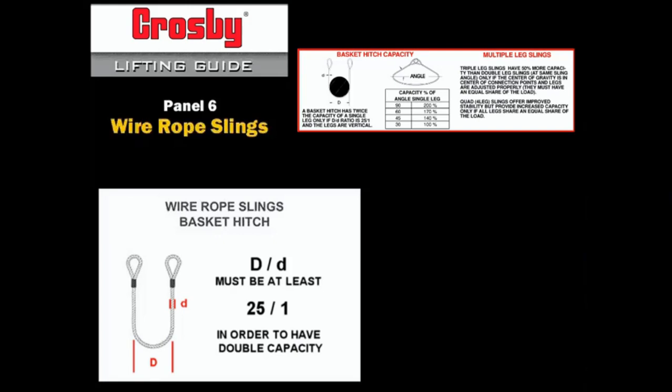when standard wire rope slings are used in a true vertical basket hitch, the D to D ratio must be at least 25 to 1 in order to have double capacity as compared to the vertical leg sling of the same size and construction of wire rope.